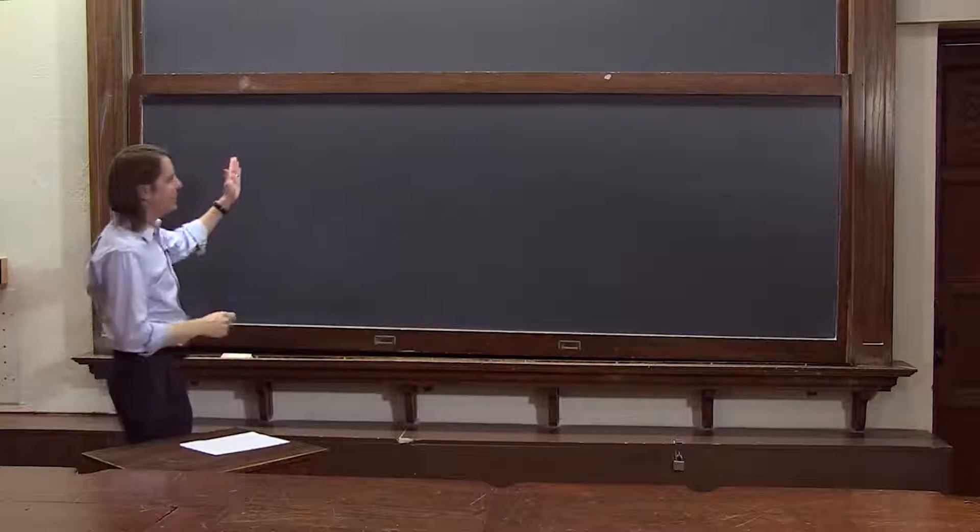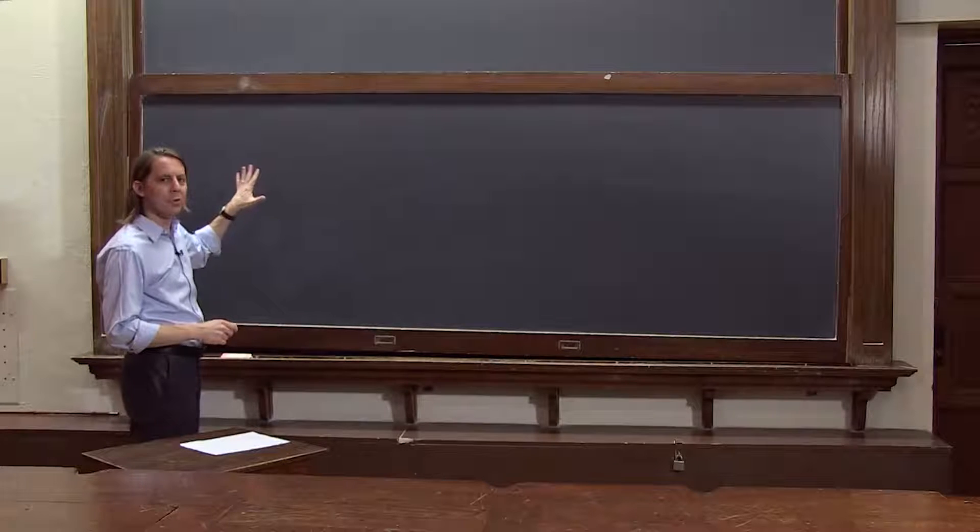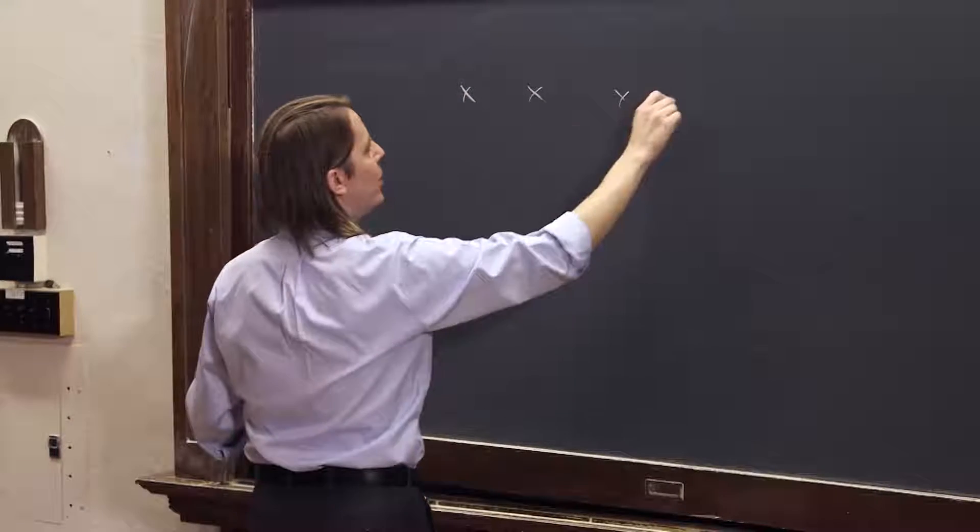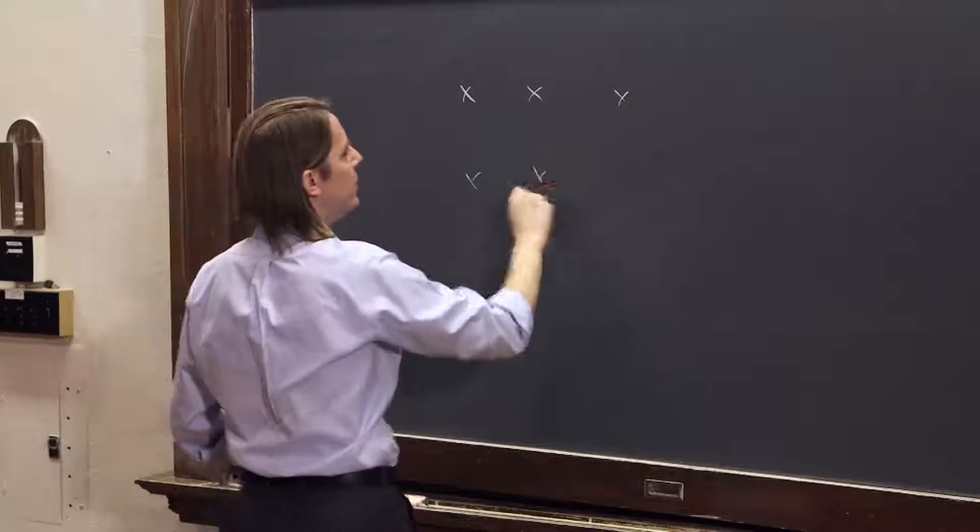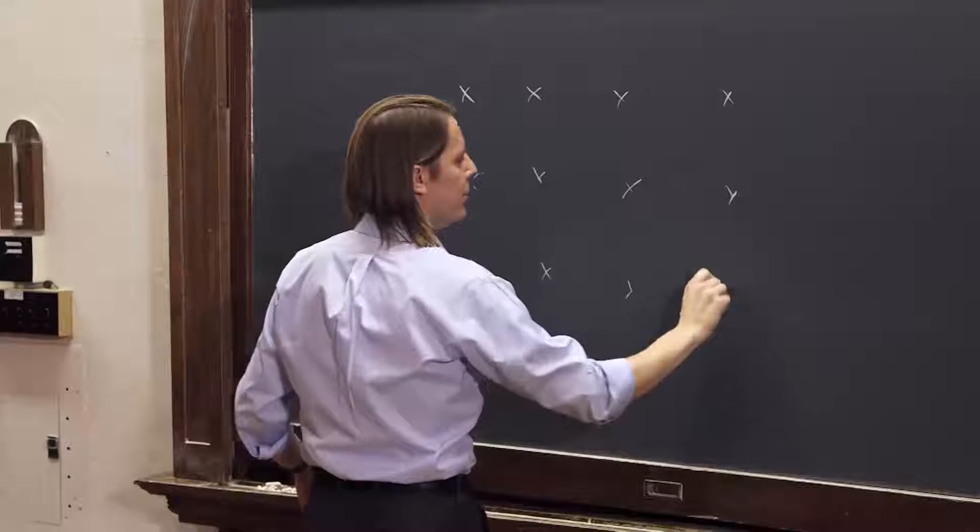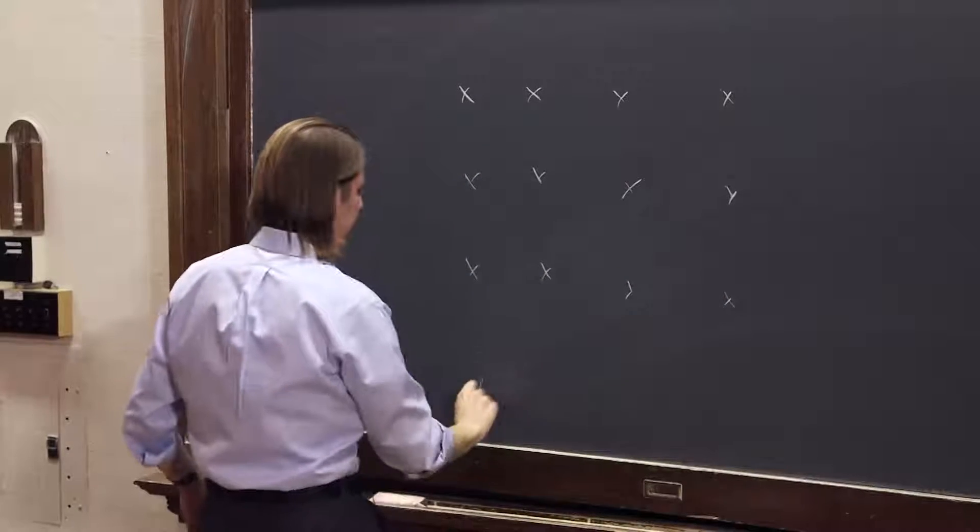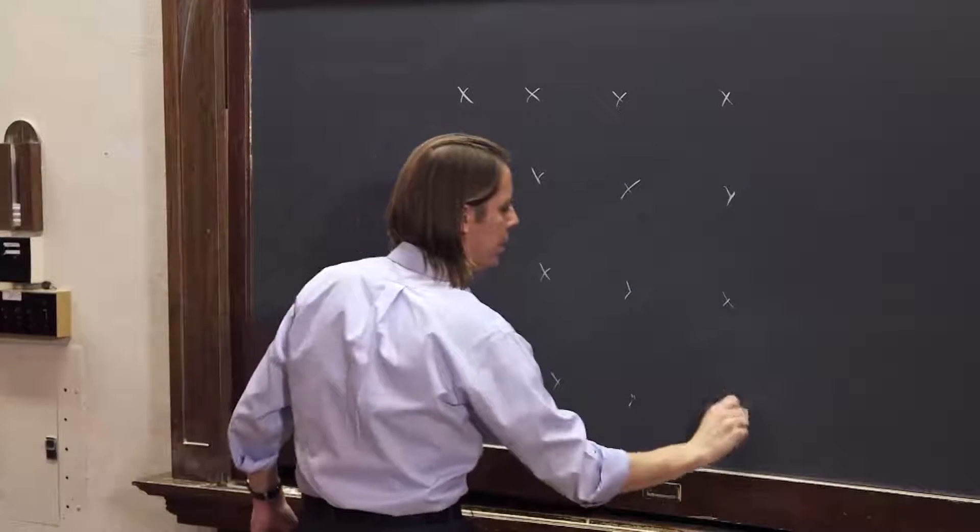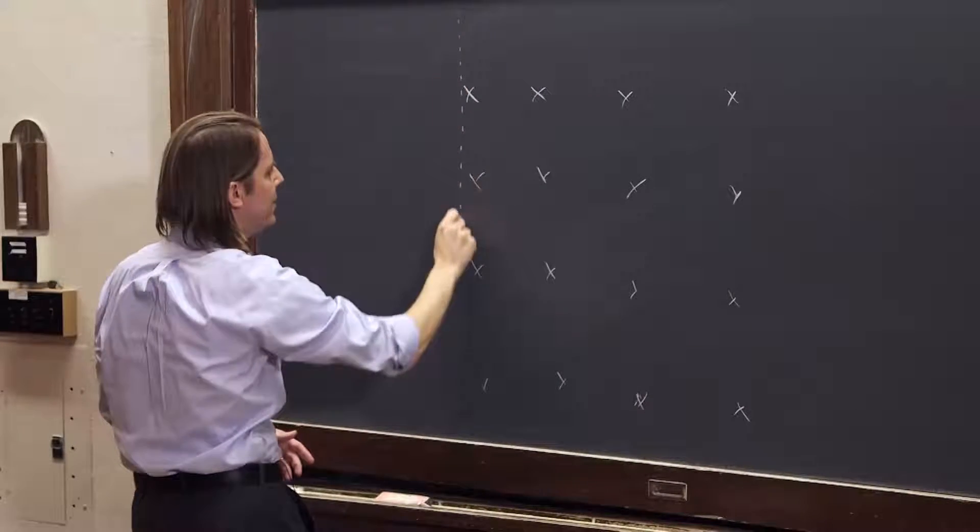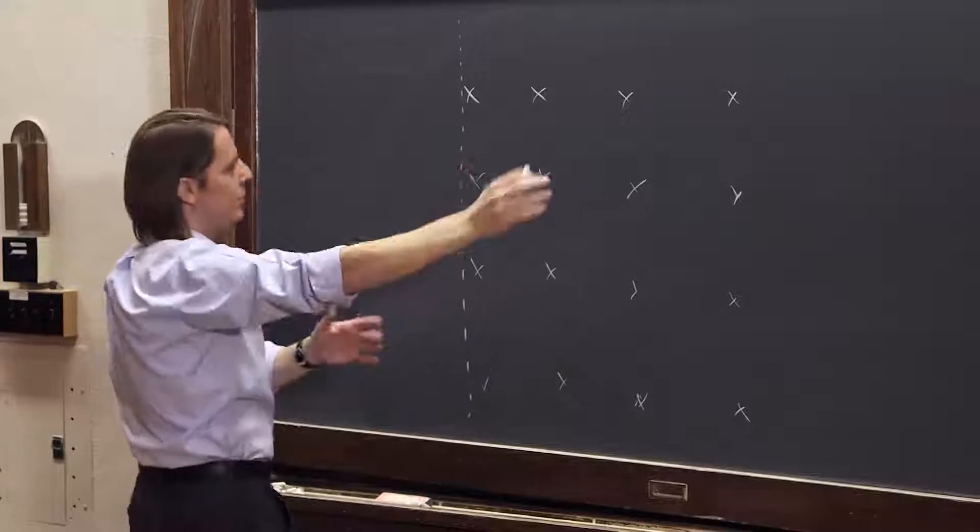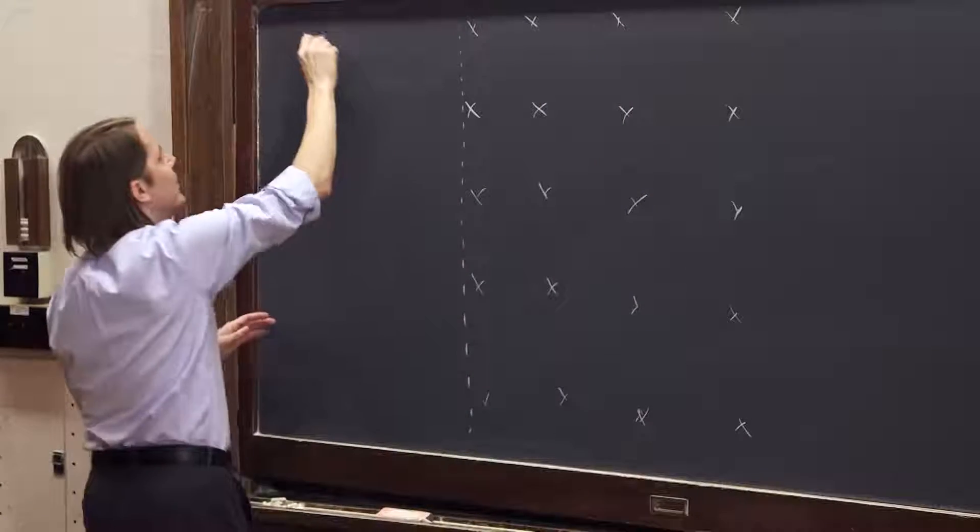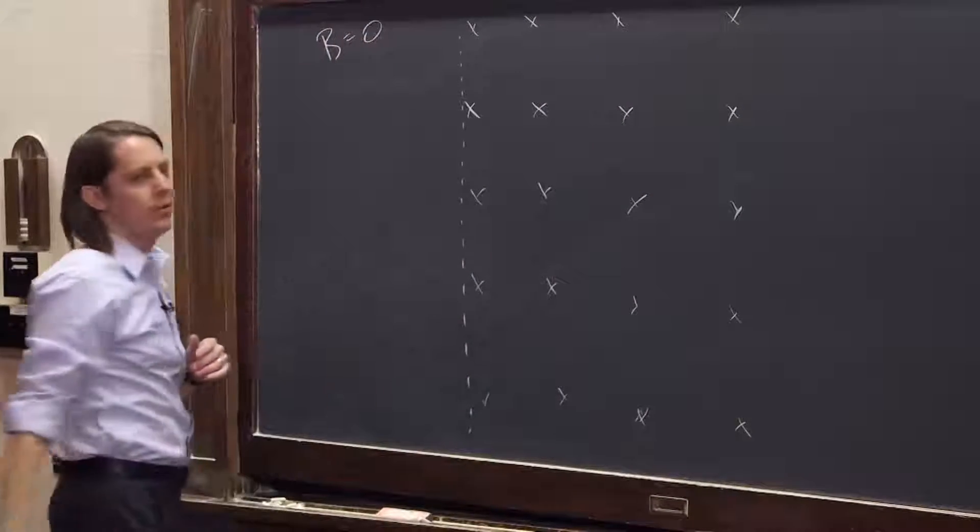Okay, so in this problem we have a region with a uniform magnetic field pointing into the board. So this is, remember how we always draw a field into the board, like this. But the uniform field does not exist everywhere. It's only to this side of this dashed line. So on a plane to the right, you've got a magnetic field pointing into the board. And to the left, the magnetic field is zero.